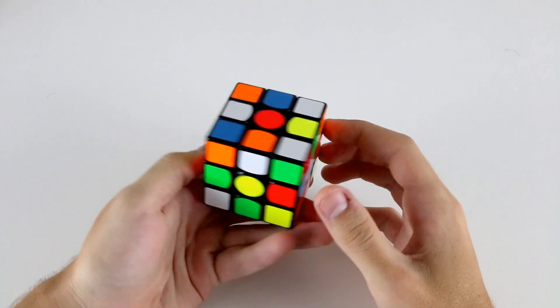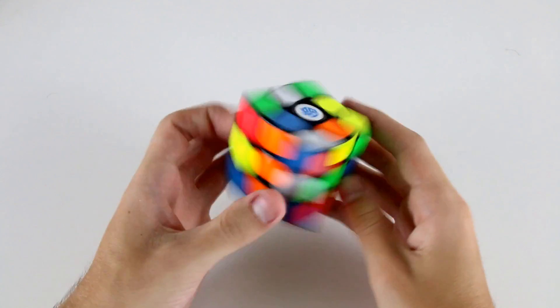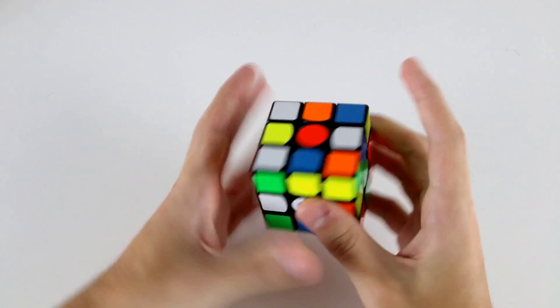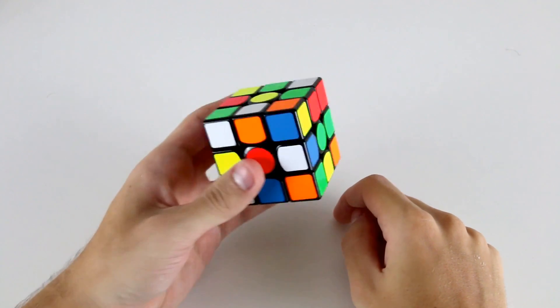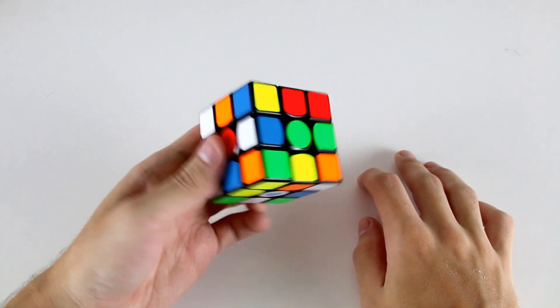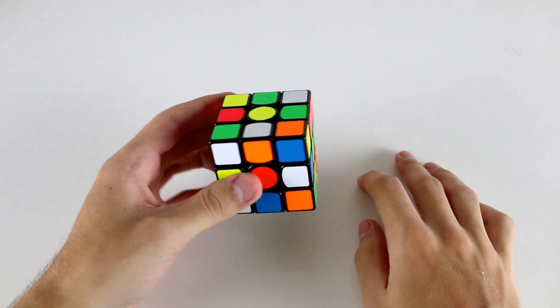Welcome to another example solves video. Let's start out by looking for the white cross pieces and we have them here, here, here and here. And I guess because they're all oriented, it's a fairly easy cross to do, but we still need to figure out a nice way to finger trick it.